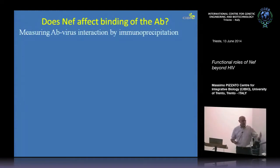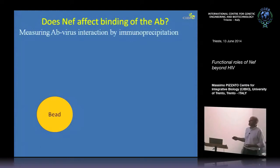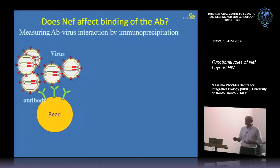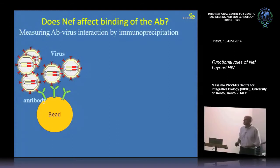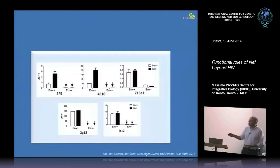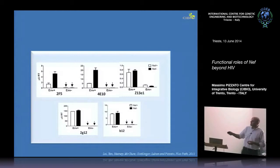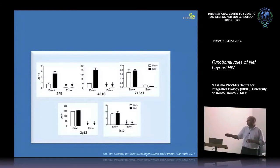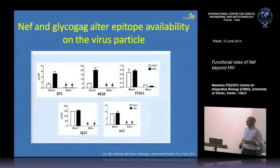We set up a virus capture assay using these antibodies — essentially an immunoprecipitation — following the logic that if an antibody neutralizes better, it probably binds better and should capture more virus. The result confirmed this: the antibody that neutralizes NEF-plus and NEF-minus virus differently can indeed capture more NEF-minus virus, and antibodies that neutralize equally well capture the same amount of virus. So NEF is altering epitope availability on the virus particle.